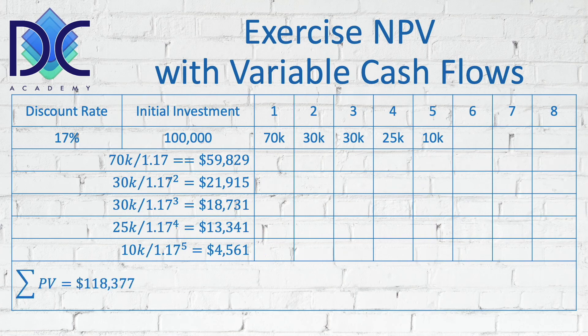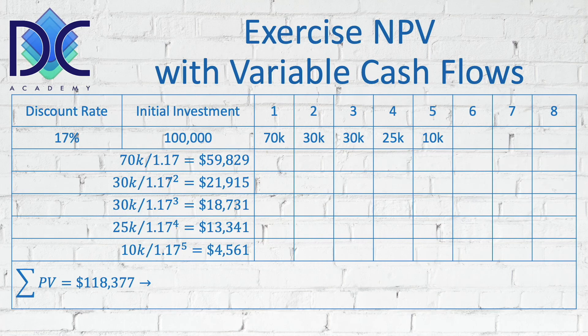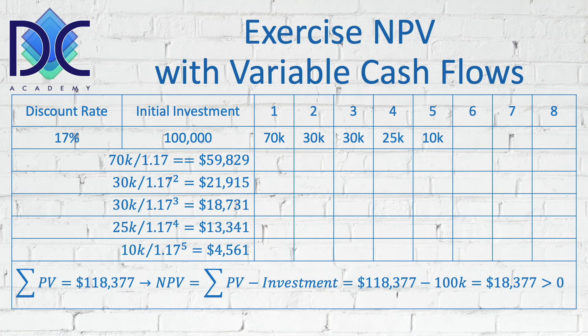Now we add up all those present values and find a total of $118,377. The NPV is obtained by subtracting the initial investment of $100,000, giving a net present value of $18,377. We are happy because it's larger than zero. We also notice that with the change in cash flows, we find a lower NPV compared to the fixed cash flow scenario.